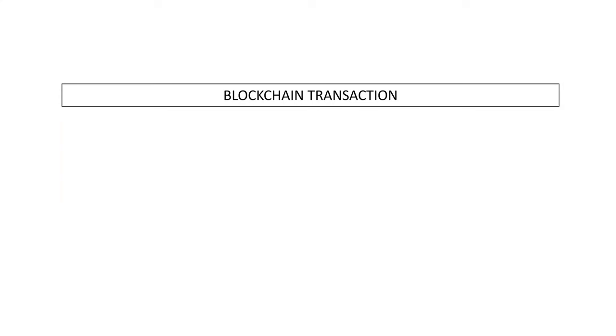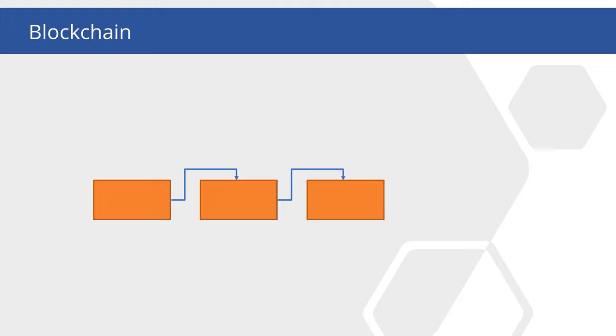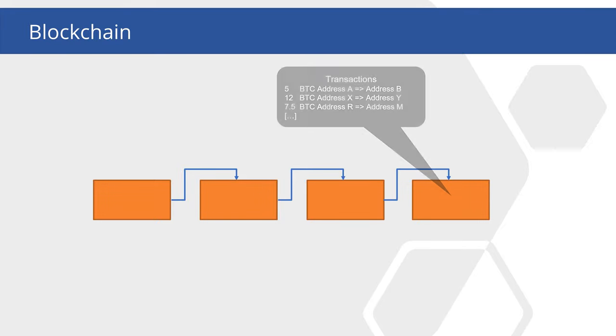In simple terms, this record shows address A transfers — let's say five units of a cryptocurrency — to address B. Each block of the blockchain can contain multiple transactions that users send to the blockchain.